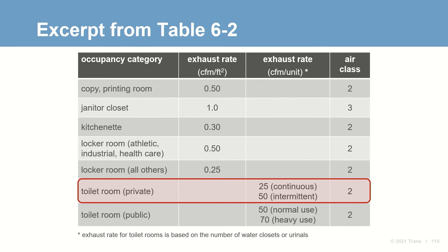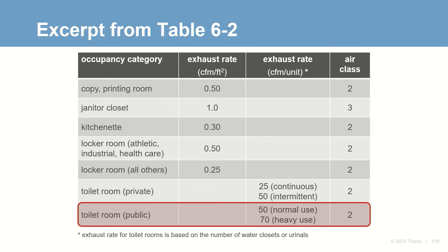Note that for toilet rooms, the exhaust rates are based on the number of water closets or urinals installed. A private toilet room is intended to be occupied by only one person at a time, with a lower rate of 25 CFM allowed if the exhaust operates continuously; otherwise, the higher rate of 50 CFM is required if the fan turns on with a light switch. For a public toilet room, the lower rate of 50 CFM per unit is permitted, but the higher rate of 70 CFM is provided where periods of heavy use are expected.